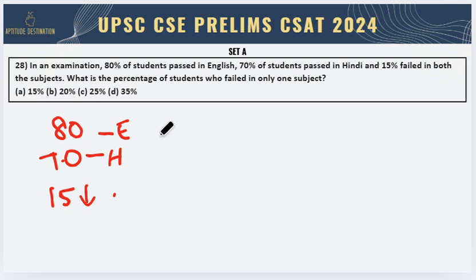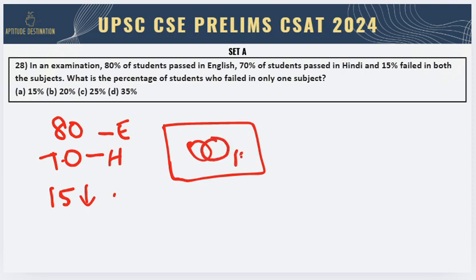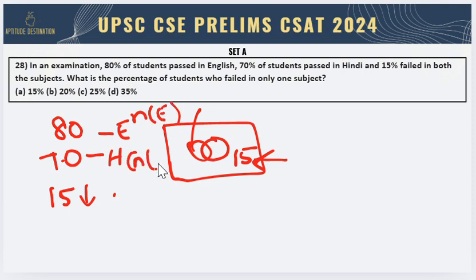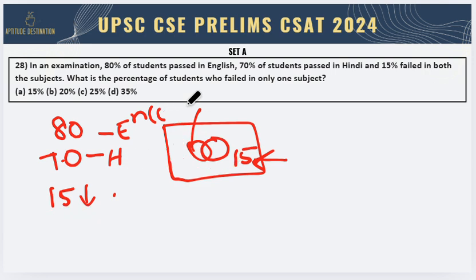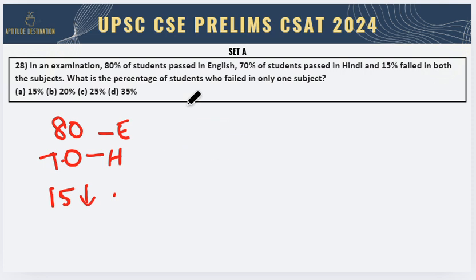Now if I consider a Venn diagram, it should be two circles, and out of these two circles, this 15 will lie outside. So this is the reason why I cannot consider this as N of E directly and N of H directly, because this value represents something that's outside the circle. Therefore, make sure you don't make that mistake. When you have something that is lying in the outer space, make sure you understand the concept.